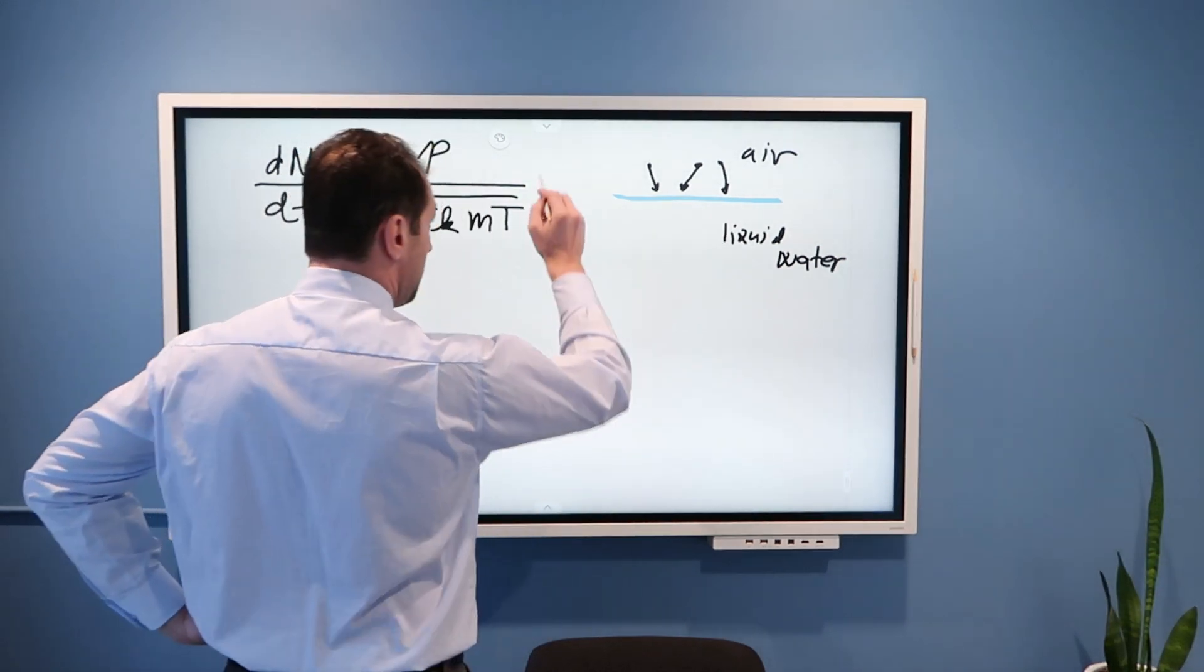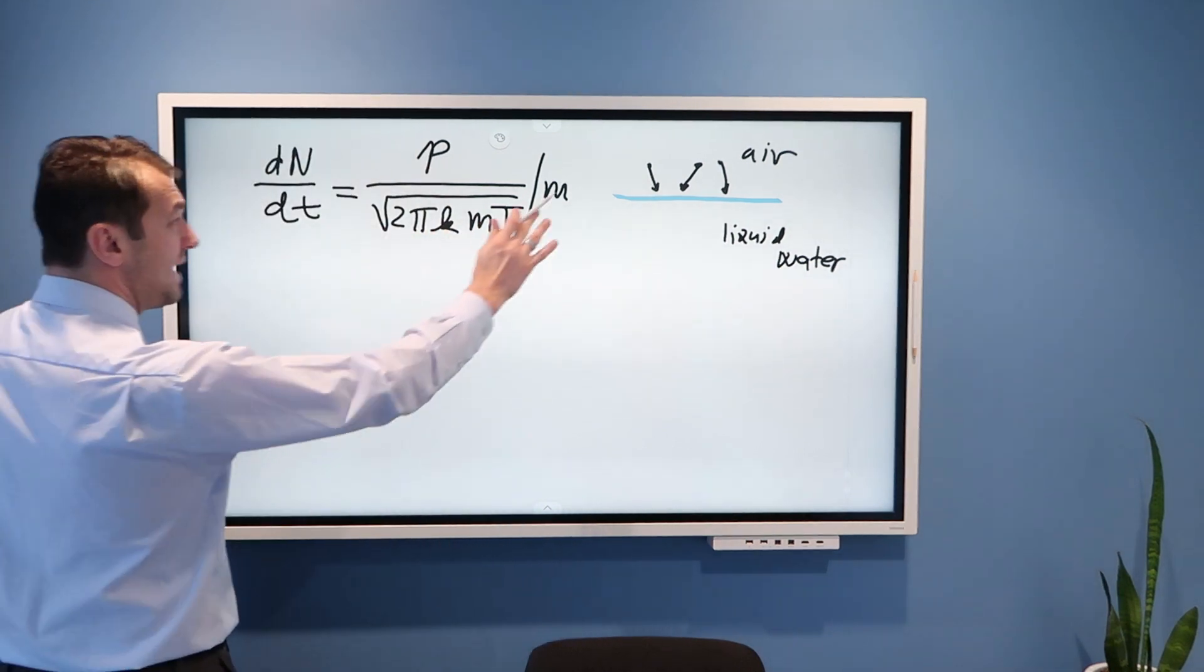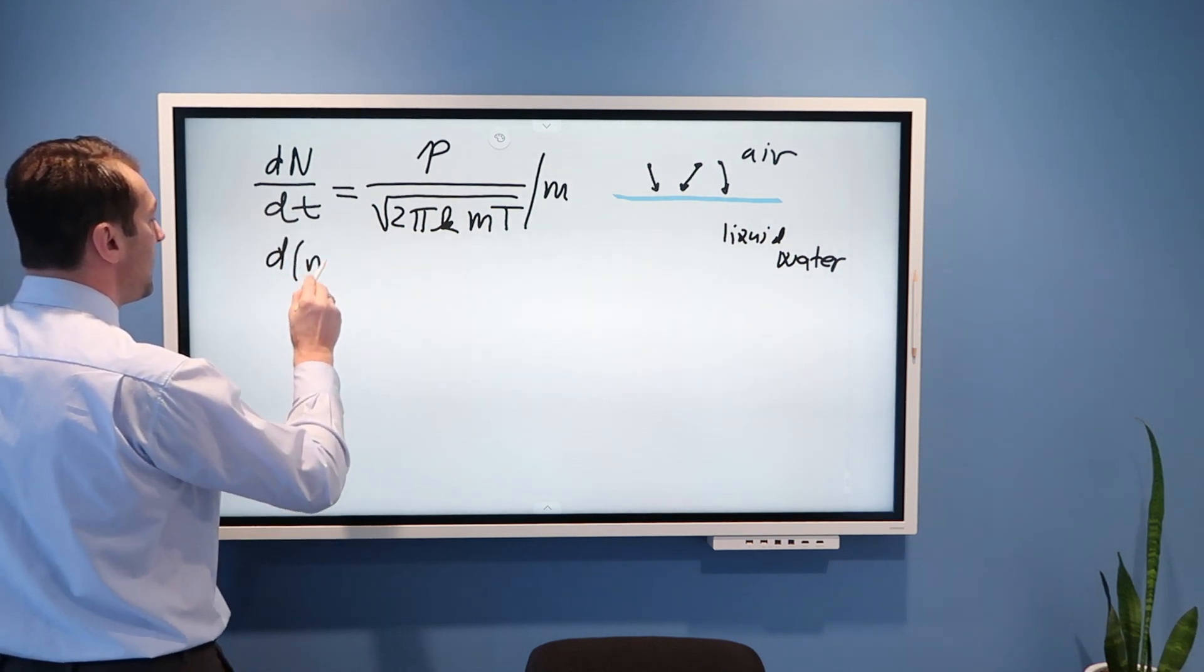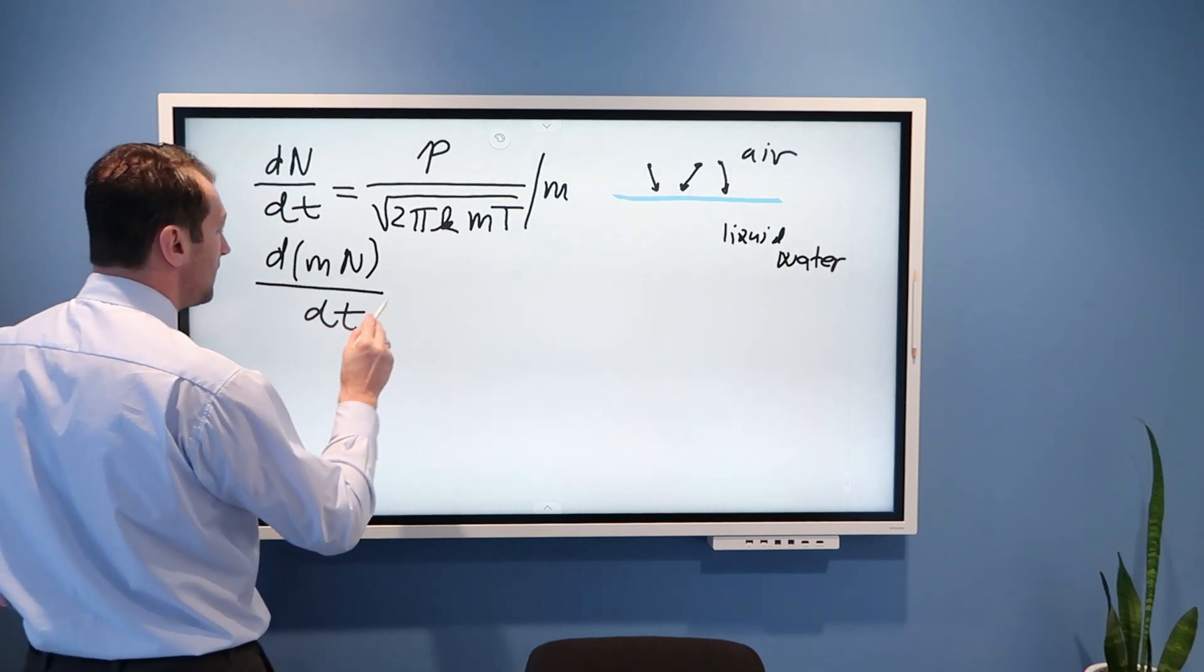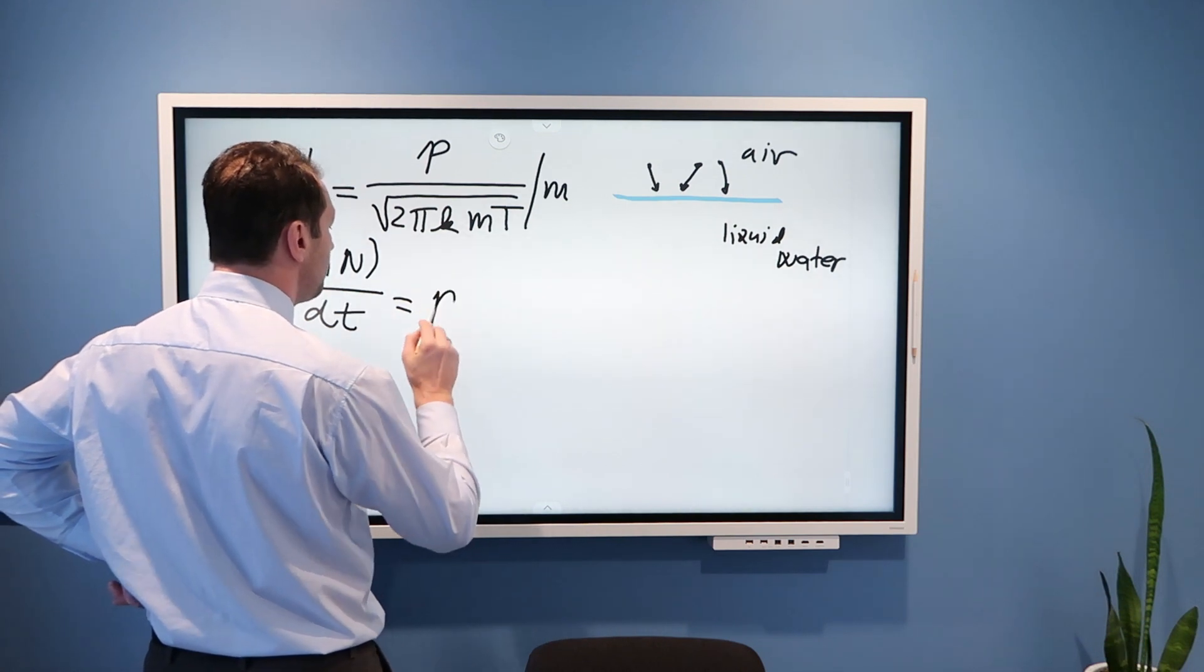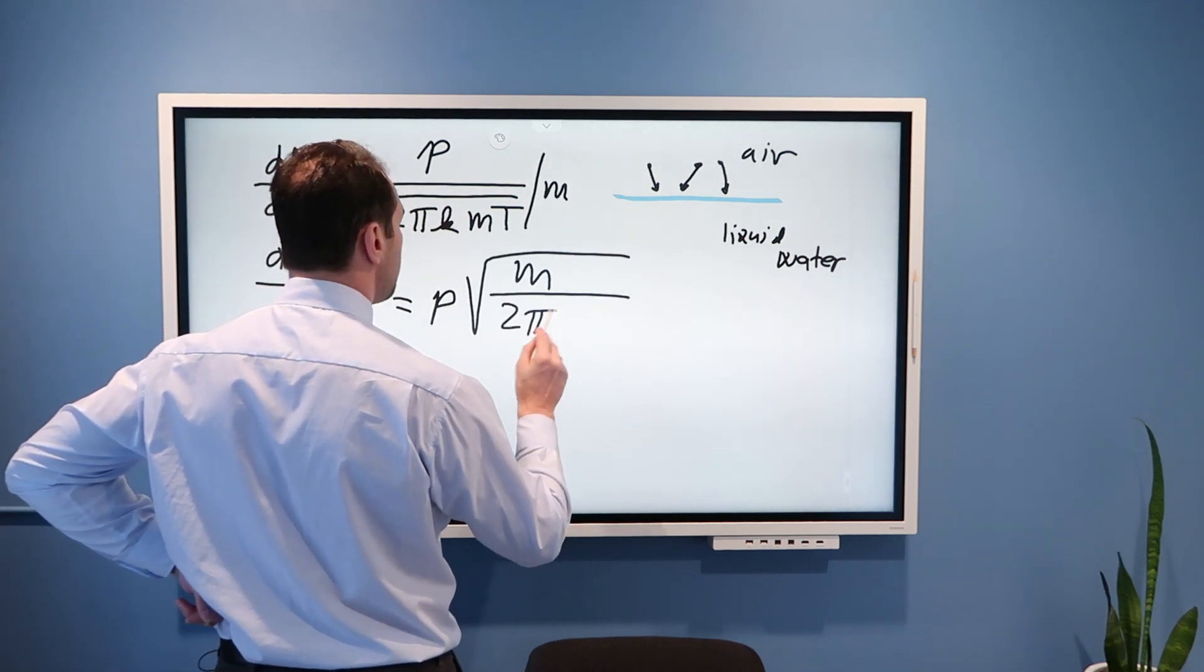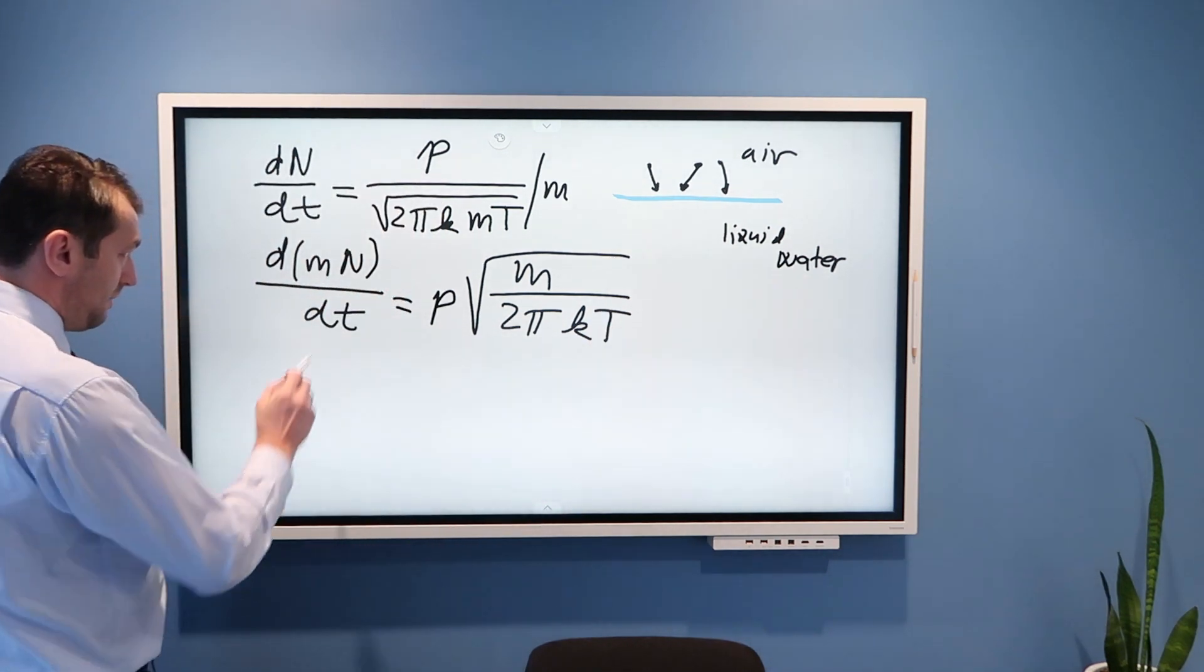Well, that means the following. I can multiply this equation by m and m is constant. Water is not radioactive, so we are not losing mass. And then I will get that dmn/dt is equal, I also have m here, so I will get here, I will put p here, so I will get m, square root rather m, divided by 2πkt.